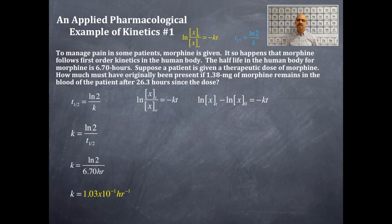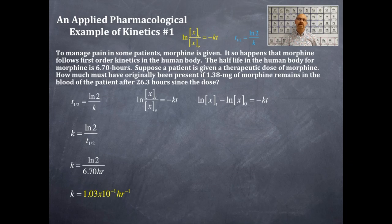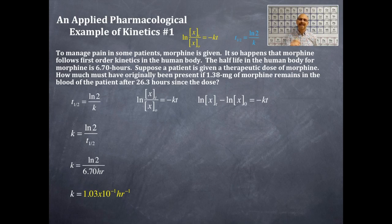The equation is: natural log of x sub-t minus natural log of x sub-naught equals negative kt. On the right-hand side we have the amount of time, that's 26.3 hours, which we plug in for t. We also have the rate constant at 1.03 times 10 to the negative 1 per hour. Notice that the rate constant and the time are in the same units — hours and per hour — so no conversion is needed. We also know the concentration at time t, which is 1.38 milligrams. We're solving for the concentration at time zero, the initial amount.